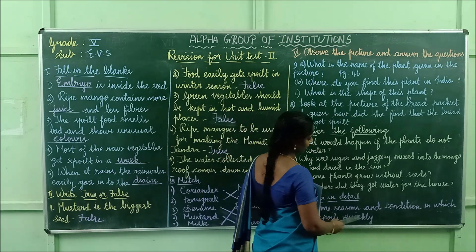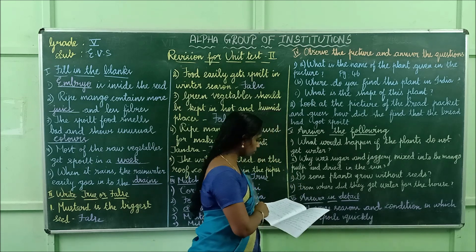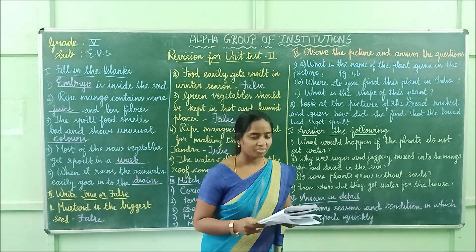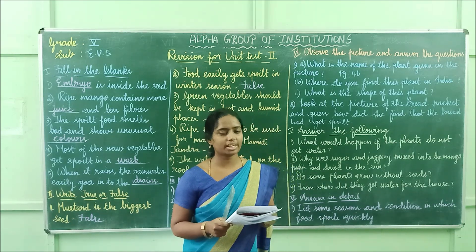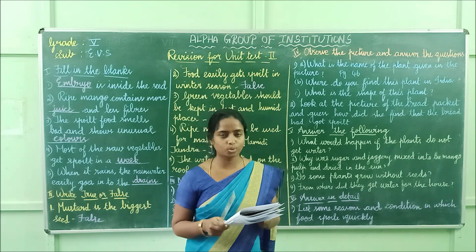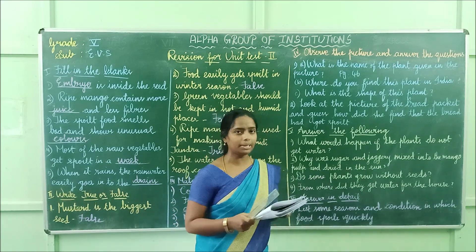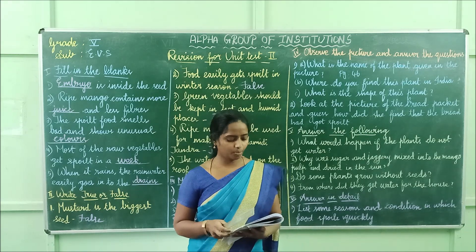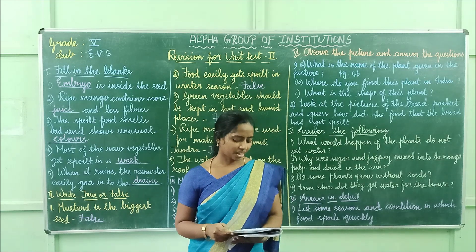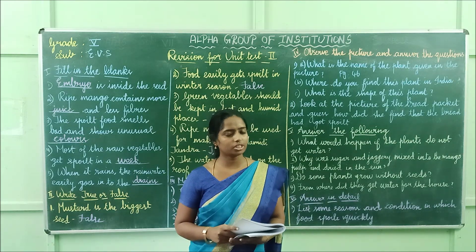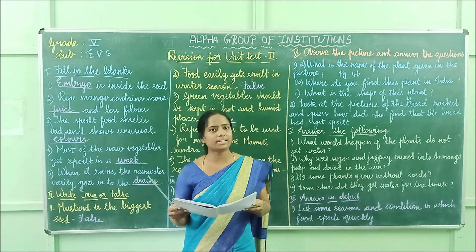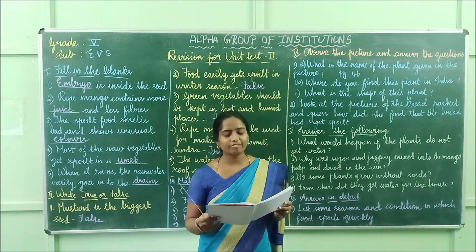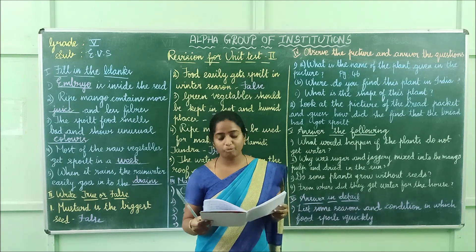Fifth question: list some seasons and conditions in which food spoils quickly. The food spoils quickly in summer and rainy season. Conditions: if cooked food is kept in open; if milk is not boiled properly; if green vegetables are kept in hot and humid places; if pickles are not protected against moisture.